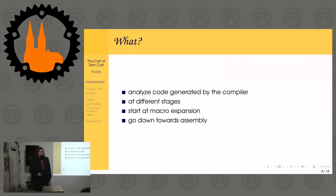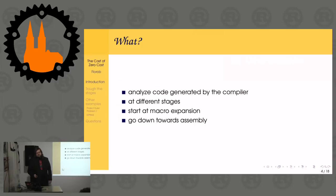I want to analyze code generated by the compiler at the different stages of compilation. Compilers generally have intermediate representations and then at the end generate assembly. Since Rust promises zero cost abstractions, we would hope that assembly is somewhat optimal considering what we're trying to do.